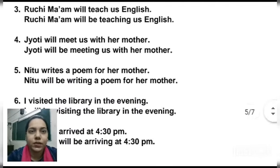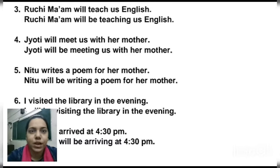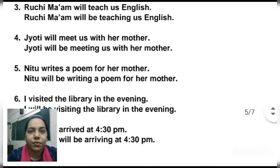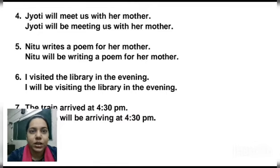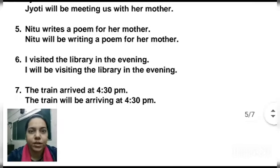Four: 'Jyoti will meet us with her mother.' Answer: 'Jyoti will be meeting us with her mother.' The verb 'will meet' changes to 'will be meeting.' Five: 'Neetu writes a poem for her mother.' Simple present tense is used here. In future continuous: 'Neetu will be writing a poem for her mother.'